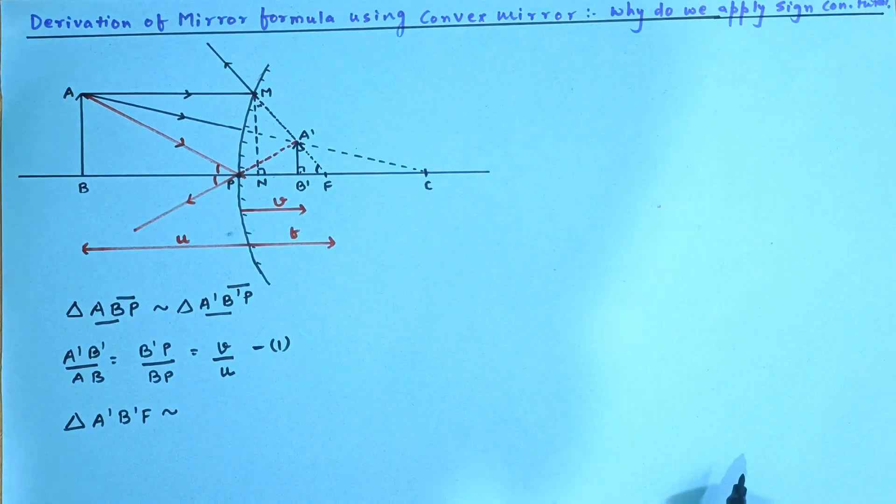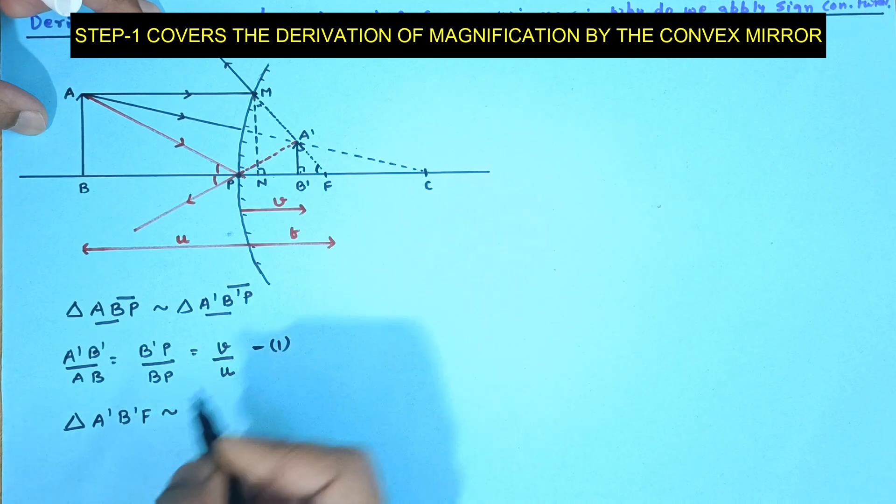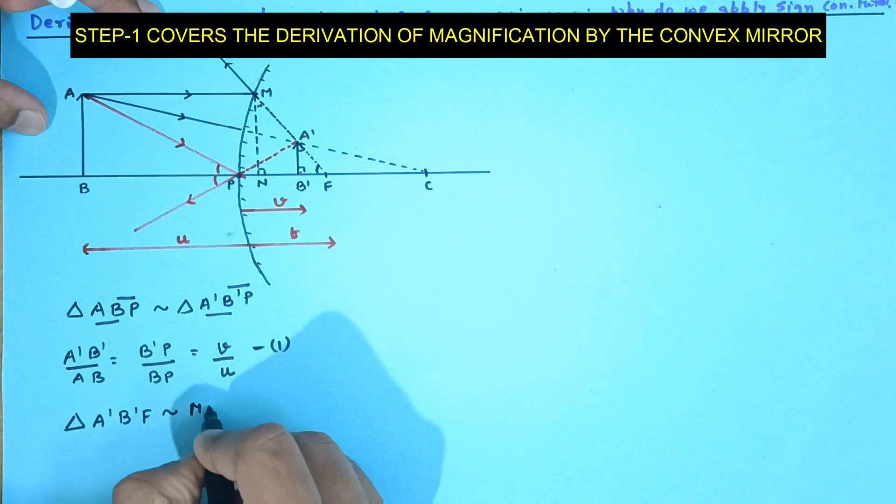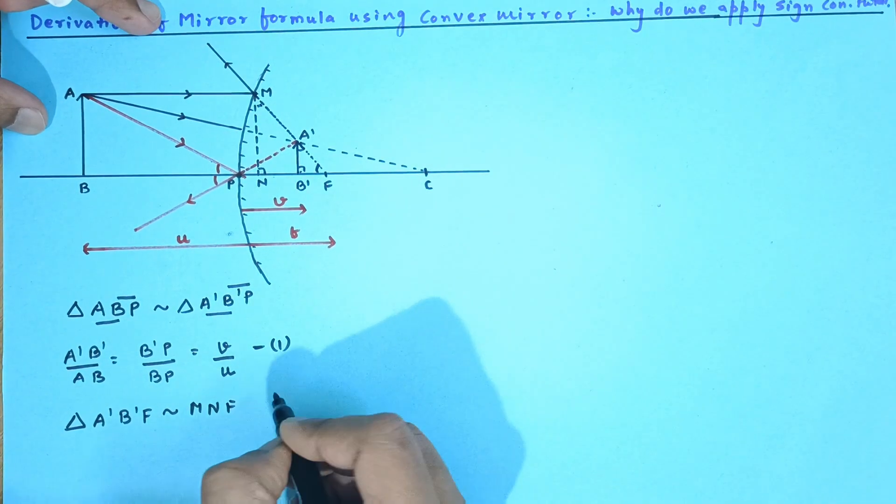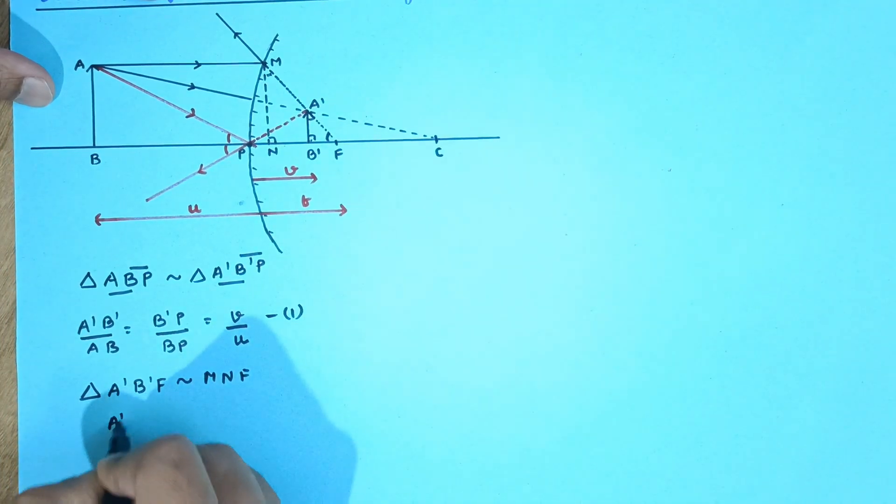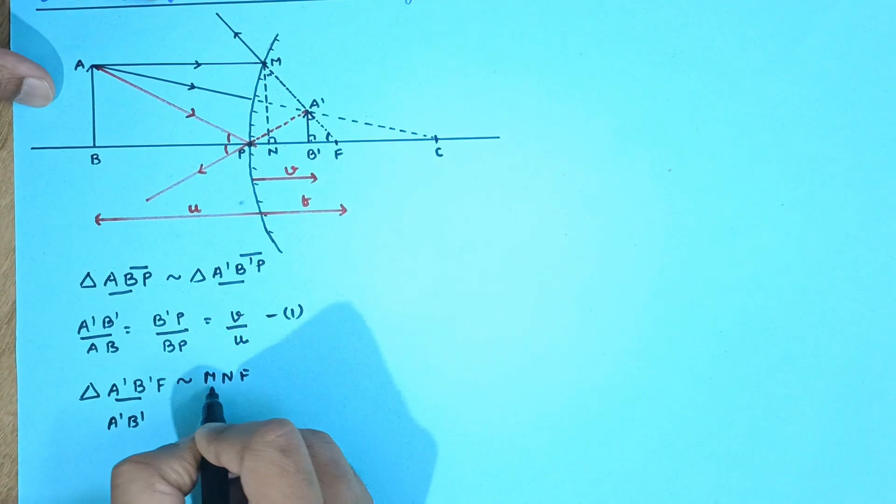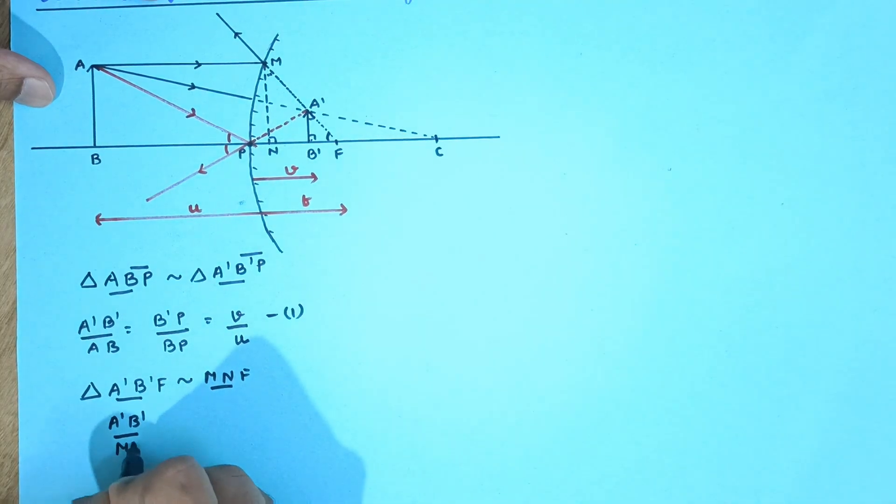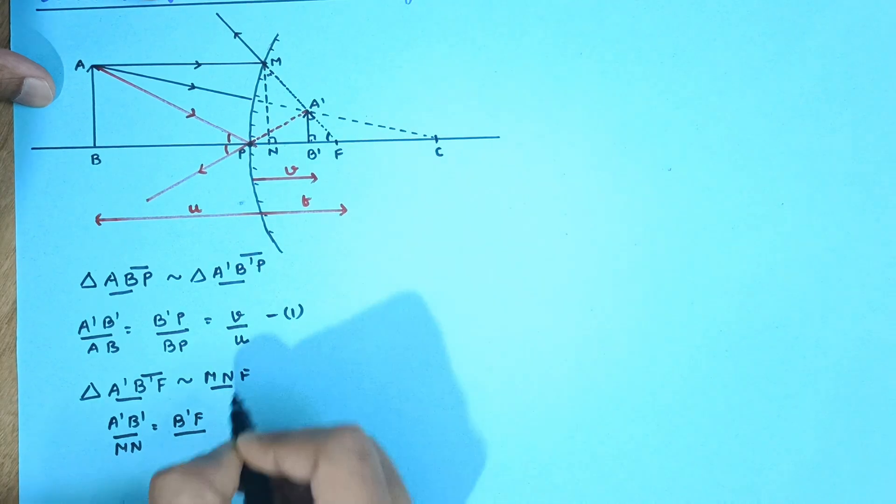So these two triangles A'B'F and MnF are going to be the similar triangles. So again, A'B' upon Mn is equal to B'F upon NF.